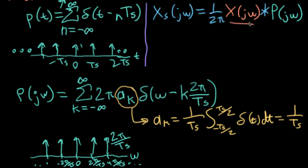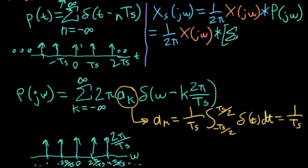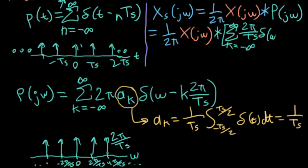We've got our basic components: big X of j omega and big P of j omega. So let's write this all out. I've got 1 over 2π times big X of j omega convolved with the sum — I have 2π over TS, which is what I get from substituting in the ak — times delta of omega minus k times 2π over TS. Convolution is linear so I can pull big X of j omega into the sum.